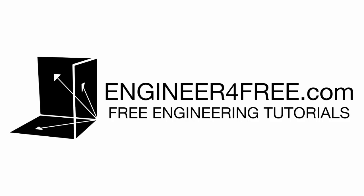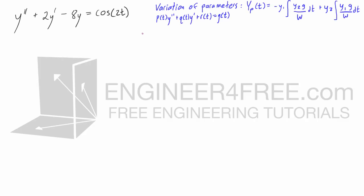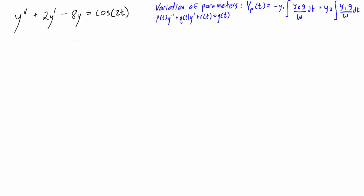Welcome back. In this video we're going over another example on using the variation of parameters to solve a second-order differential equation. In this case we have a cosine function on the right-hand side, and because of that this equation would actually be easier to solve using the undetermined coefficients method, but we're going to use the variation of parameters anyway.